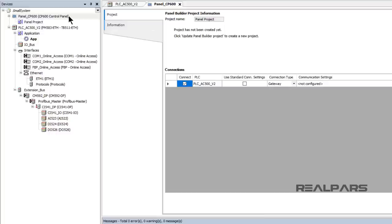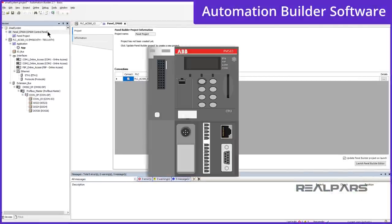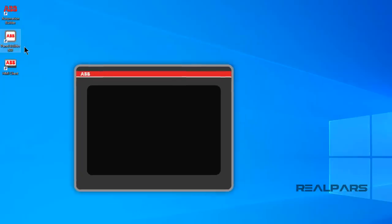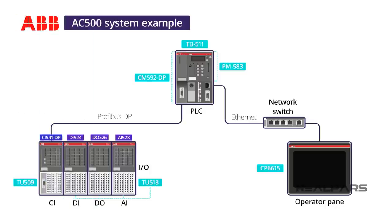The hardware is now ready and the PLC and operator panel can be programmed to meet the requirements of my project. The PLC is programmed with the Automation Builder software, and the control panel is programmed with a software application called Panel Builder 600. This video has provided a basic understanding of the features and capabilities of the ABB AC500 family of PLCs and hardware. Once you understand the requirements for your process, choosing the right AC500 PLC, communication interfaces, and I/O modules should be no problem.